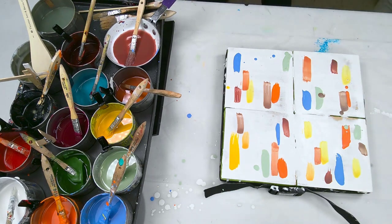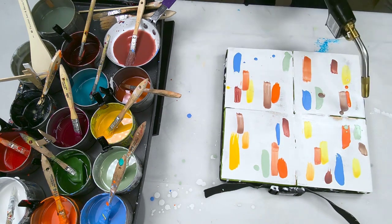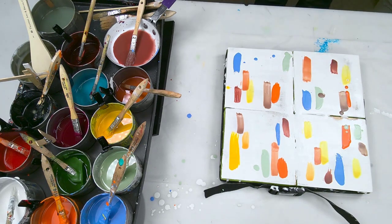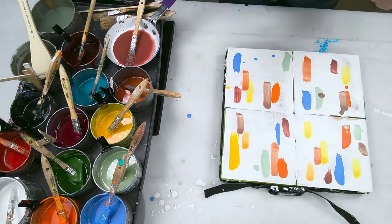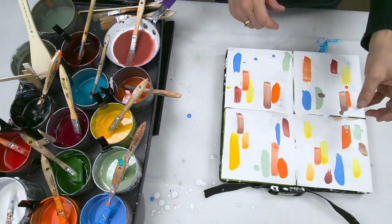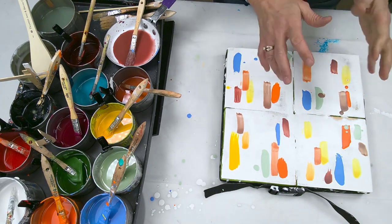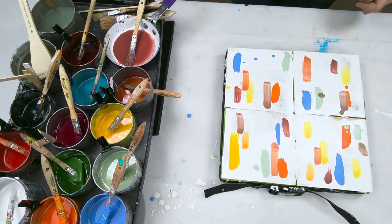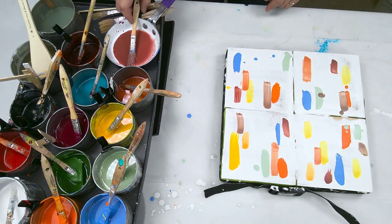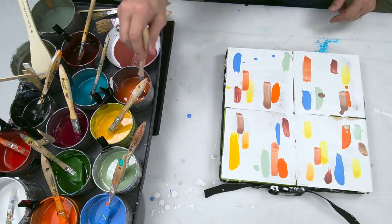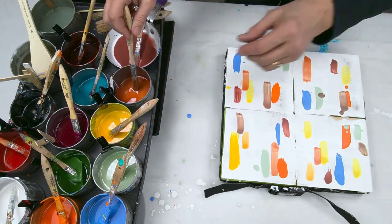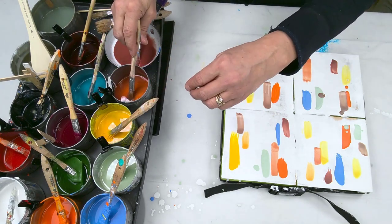Basically when you fuse it what you're looking for is the surface to get a little bit kind of glossy. You don't have to like, if you focus your heat whether it's a heat gun or a torch on any one area of your painting it's definitely going to go molten on you and you're going to see a lava flow and that's fine if that's what you like, just expect that.